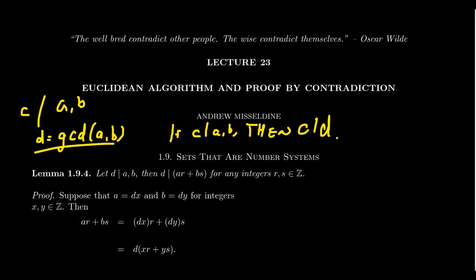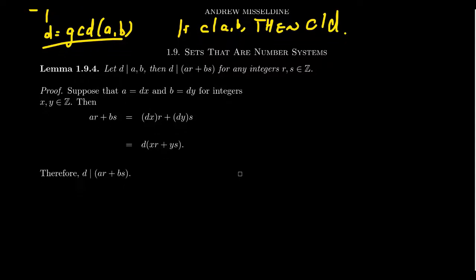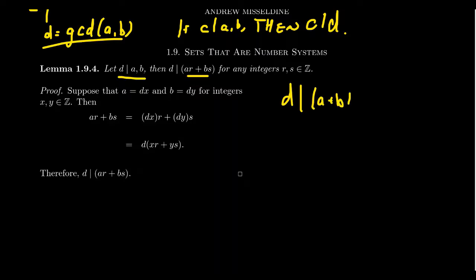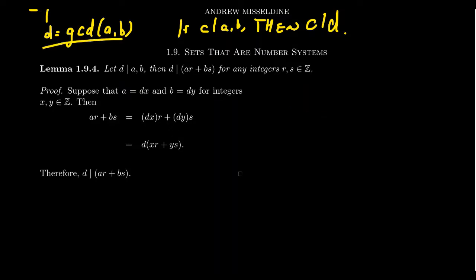The Euclidean algorithm has a lot to do with greatest common divisors, or GCDs, so that review is necessary. Before we talk about the Euclidean algorithm, I also want to mention a very important, very useful lemma: suppose that D is a common divisor of integers A and B; then D will also be a common divisor of any linear combination of A and B. If R and S are integers, then D will divide AR plus BS. In particular, D divides the sum and difference of A and B.